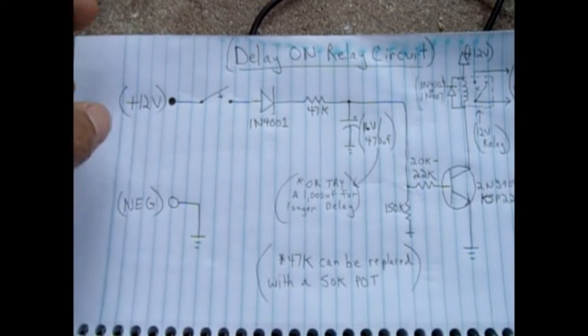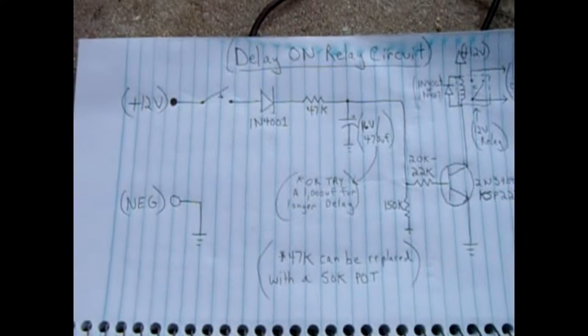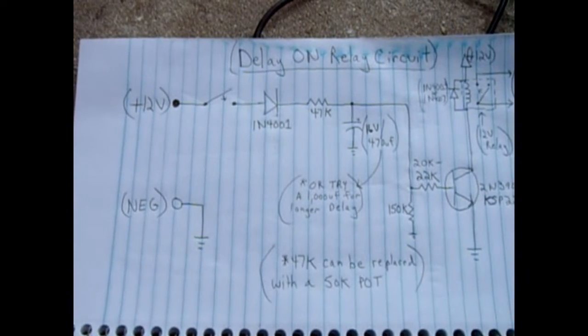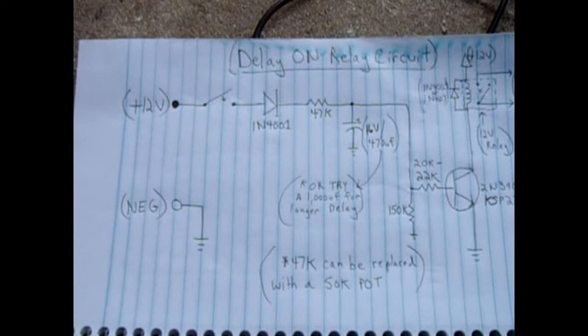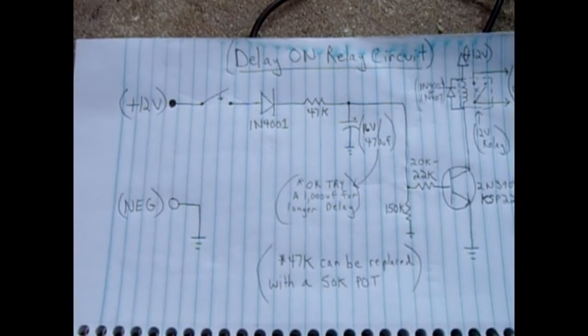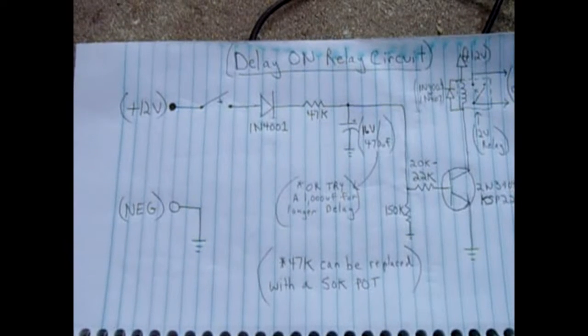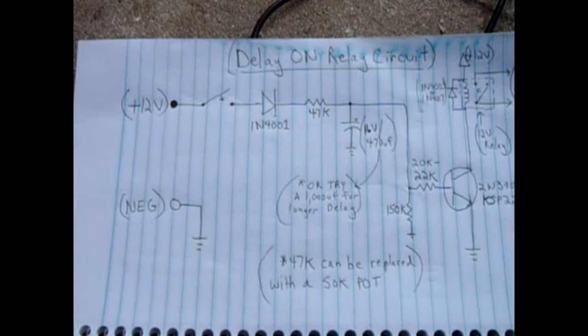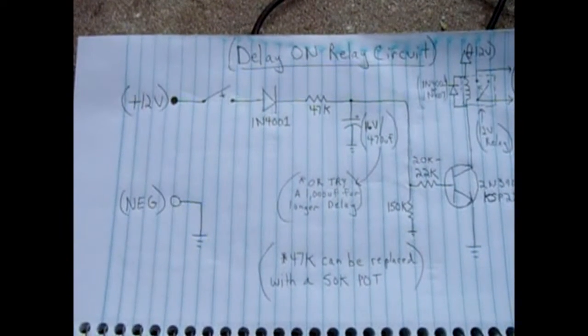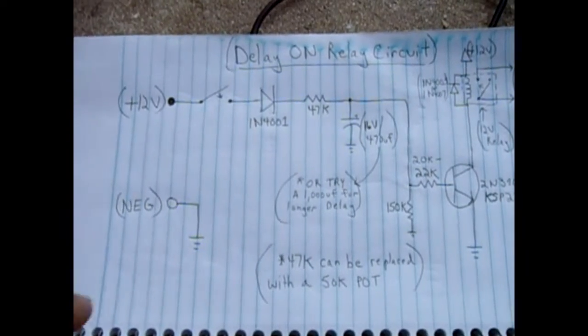So you would open your car door, enter quickly and close the door and the light would not come on. But if you want to put groceries and stuff into your car, you would open the door or leave it open, and then after the duration has passed the interior lights will come on, set by the value of the capacitor.